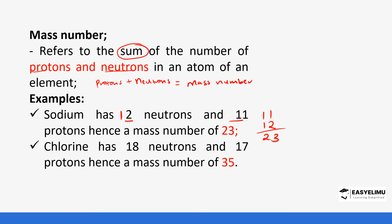Chlorine has 18 neutrons and 17 protons, so it is 18 plus 17, giving a mass number of 35. The number of protons and neutrons are not always the same — every atom has its own unique number of neutrons and protons. For example, you cannot say sodium has 11 protons and 11 neutrons, or that chlorine has 17 protons and 17 neutrons. We will later discover that chlorine can form isotopes.